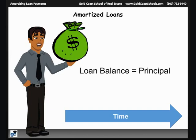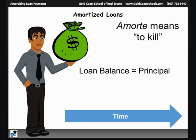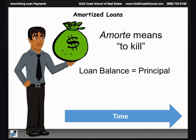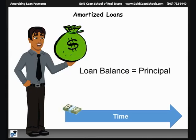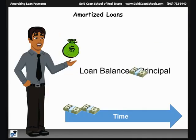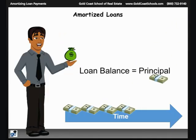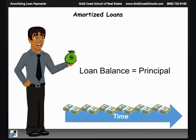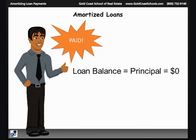So what does it mean to amortize a loan? The word amortize comes from the Latin word amorte, which literally means to kill. With an amortized loan, the borrower kills a portion of the principal, or loan balance, every time they make a loan payment. Every payment reduces the loan balance. When the final payment is made, the loan is paid off and the principal is zero.